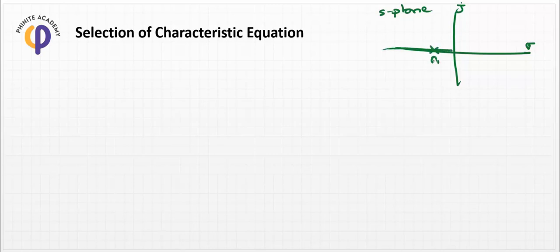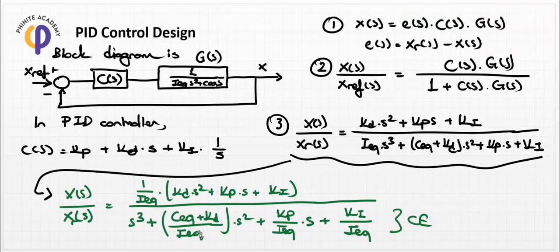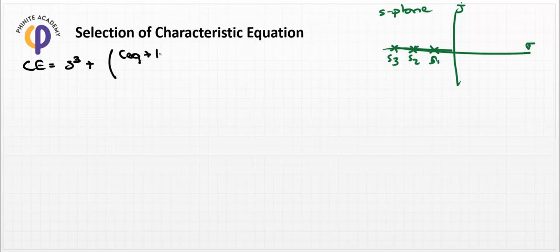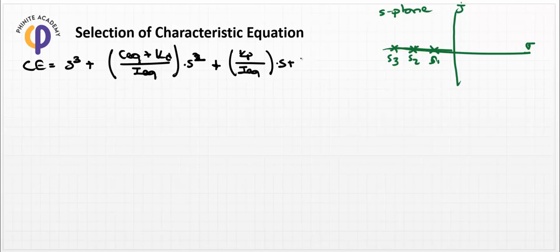If we select the roots s1, s2, s3 on this plane, then the system is stable. What about the previous equation? The characteristic equation is equal to s³ plus (Cx plus Kd) divided by Ix, times s² plus Kp divided by Ix, times s plus Ki divided by Ix. This is our characteristic equation.